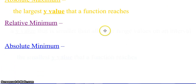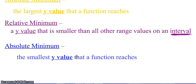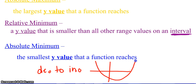Minimums are y values that are smaller than all other range values on an interval. We're talking about one little piece of the graph — relative to things around it, are your values higher or lower? Talking about absolutes, we have our smallest y value that a function reaches in its entirety — the absolute lowest y value. By definition, absolute can only mean one, so once you've identified your minimums, figure out which one is the absolute lowest. Minimums occur when your graph changes from decreasing to increasing.